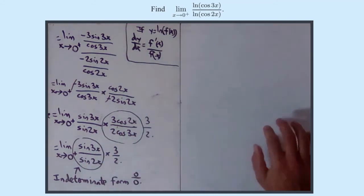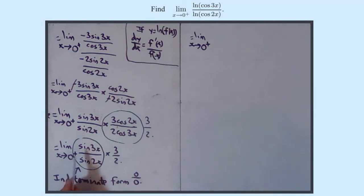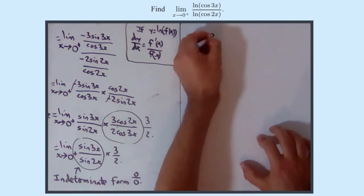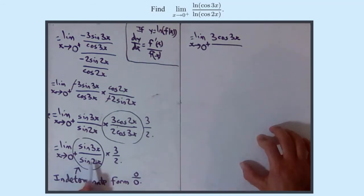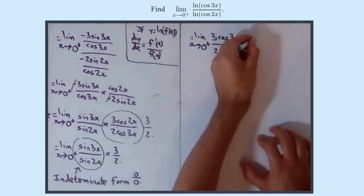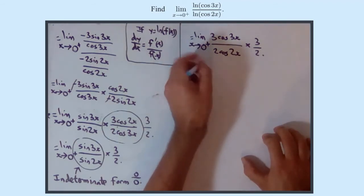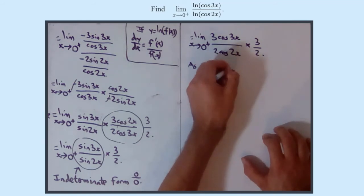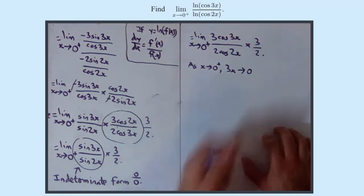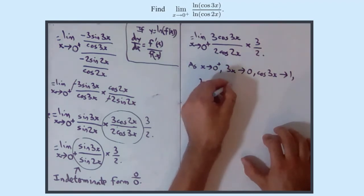So we're going to differentiate both of those. As x approaches 0 from the right-hand side, we differentiate sin 3x to get 3 cos 3x, and sin 2x to get 2 cos 2x. Then we've still got the times 3 over 2. Now, as x approaches 0 from the right, 3x approaches 0, so cos 3x approaches 1 and 3 cos 3x approaches 3. In the same way, 2 cos 2x approaches 2.